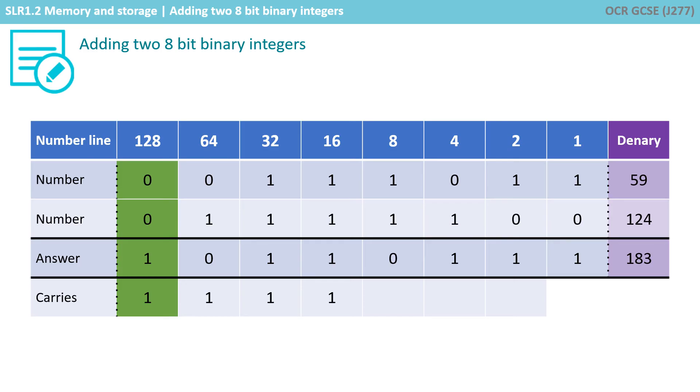So our binary answer is 10110111, which is 183.